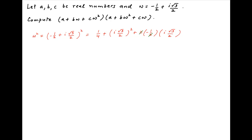Now, i square is equal to minus 1. Therefore, omega square is equal to 1 upon 4 minus 3 upon 4 minus i times root 3 upon 2, which simplifies to minus half minus i times root 3 upon 2.